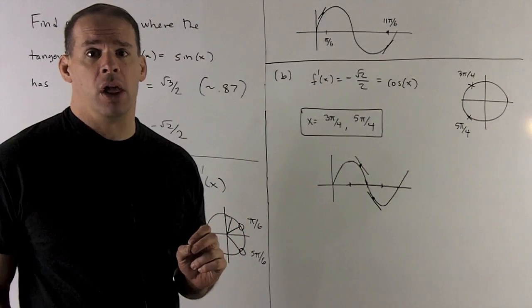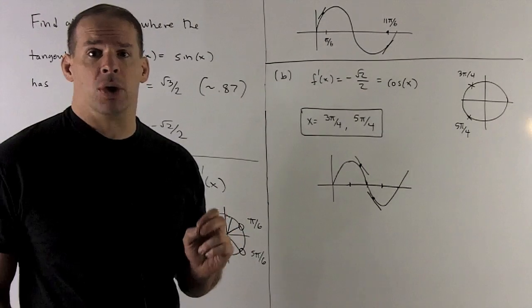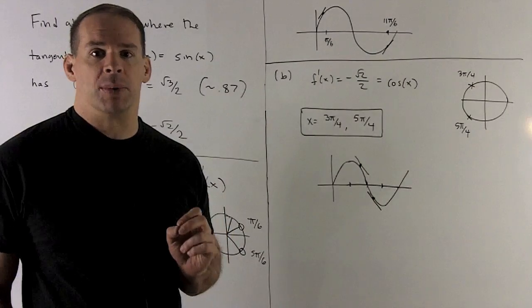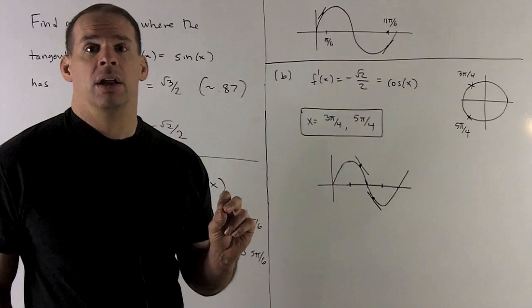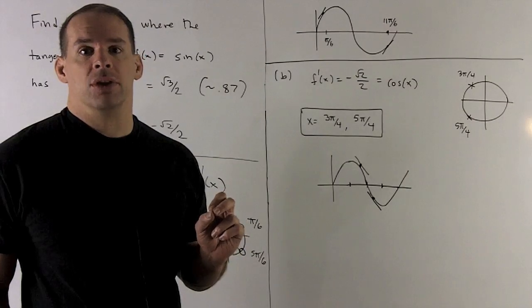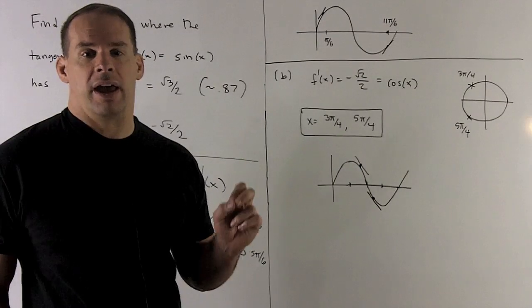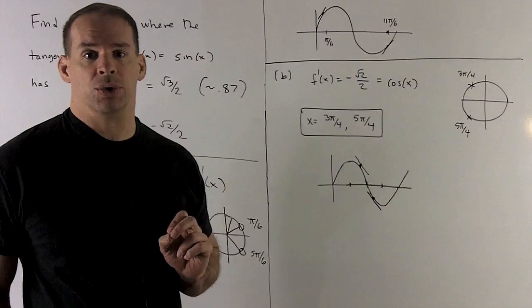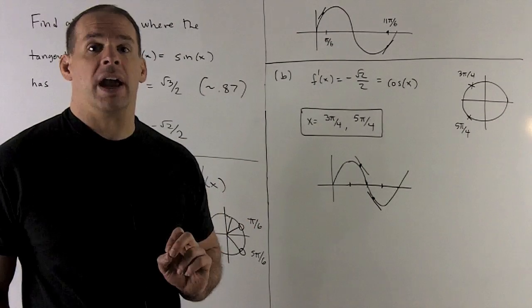Cosine is our x value in the unit circle, and we know that square root of 2 over 2 goes with multiples of pi fourths. So in this case, we want the multiples of pi fourths in second quadrant and third quadrant. So that's going to be 3 pi fourths and 5 pi fourths if we're only looking between 0 and 2 pi. That's going to be our answer.